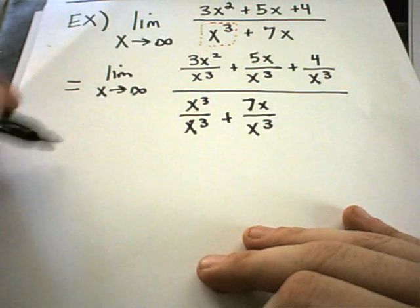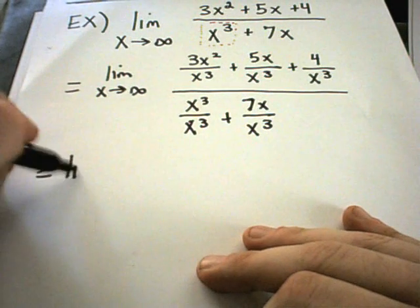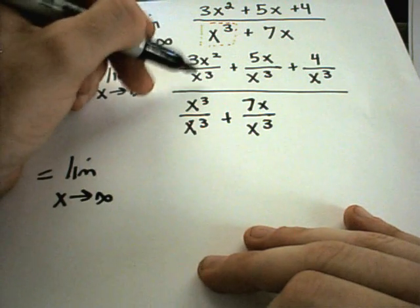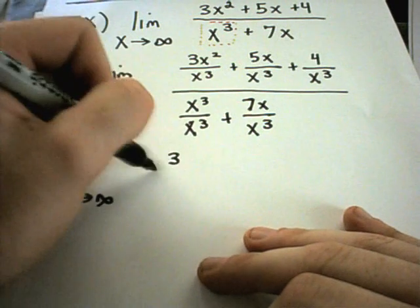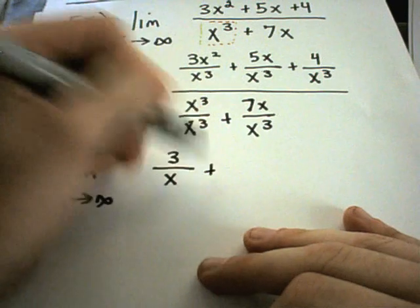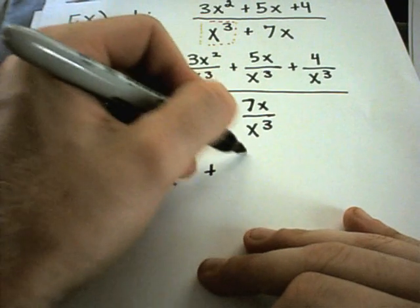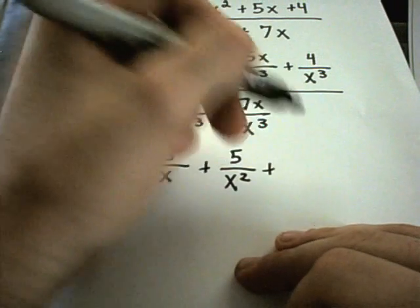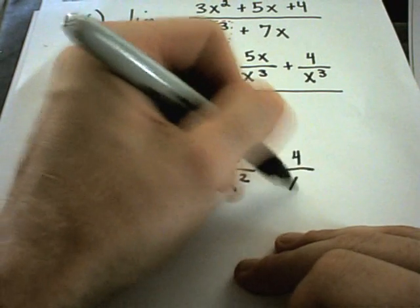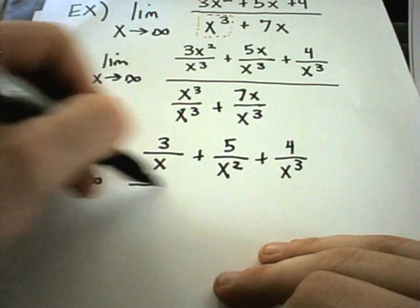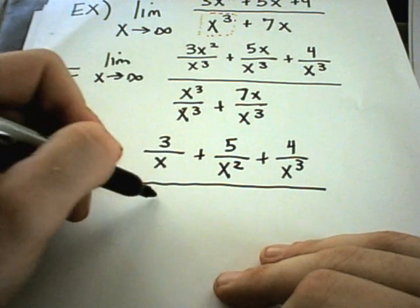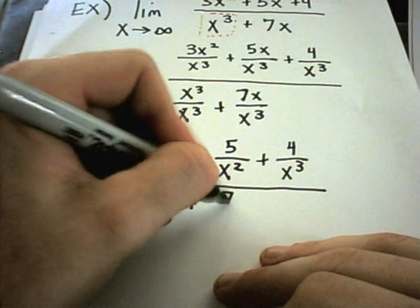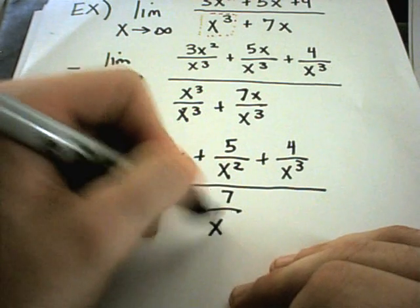The next thing is we simply simplify this down. 3x squared over x cubed leaves 1x in the denominator, giving 3 over x. 5x over x cubed gives 5 over x squared. There's not much to do with the 4 over x cubed term, so we leave that alone. x cubed over x cubed is 1, and 7x over x cubed gives 7 over x squared.